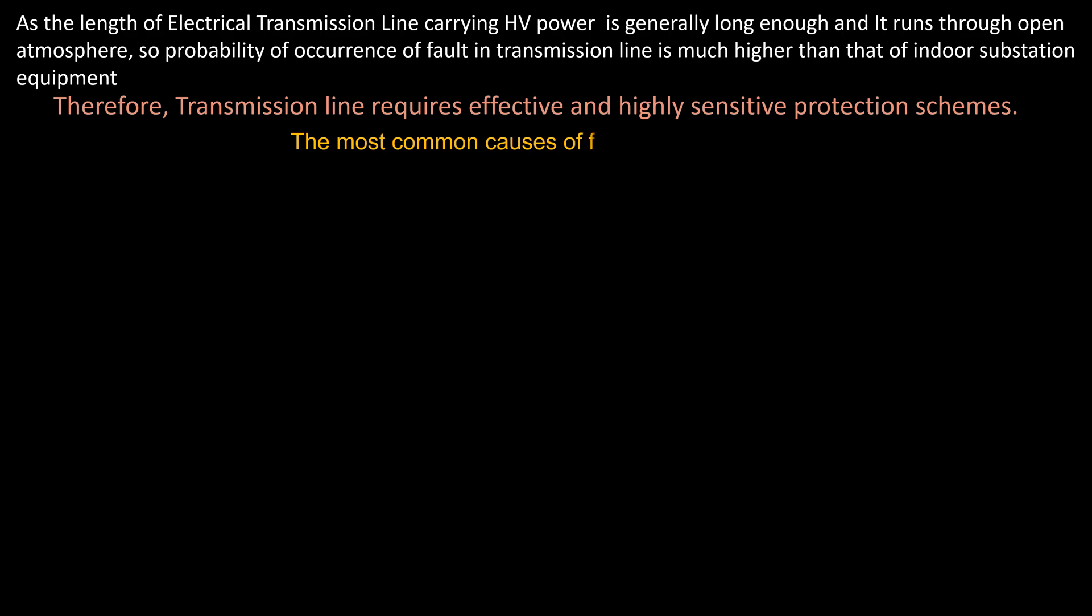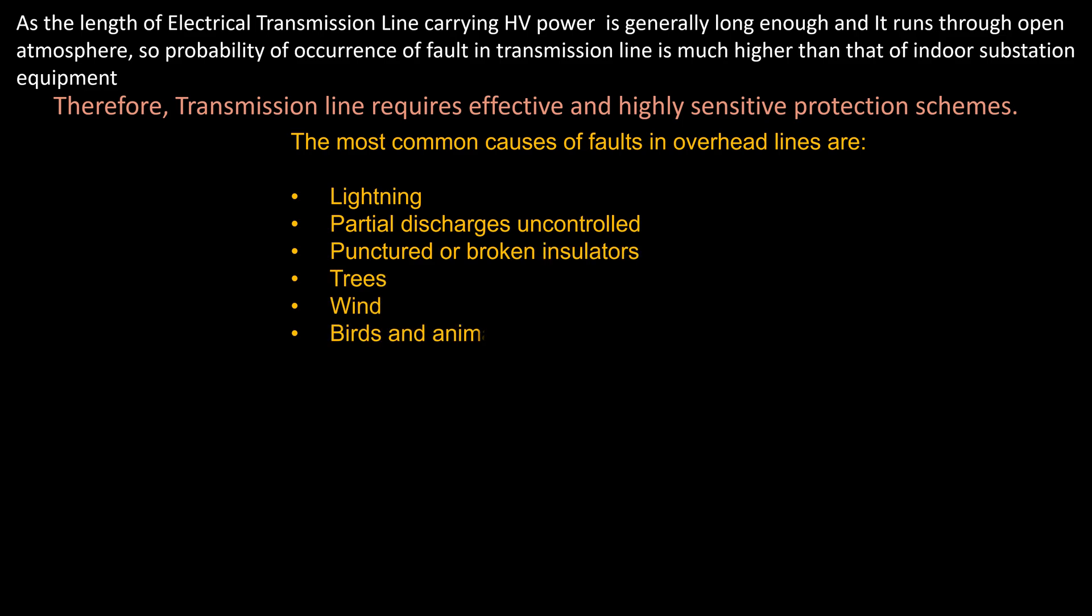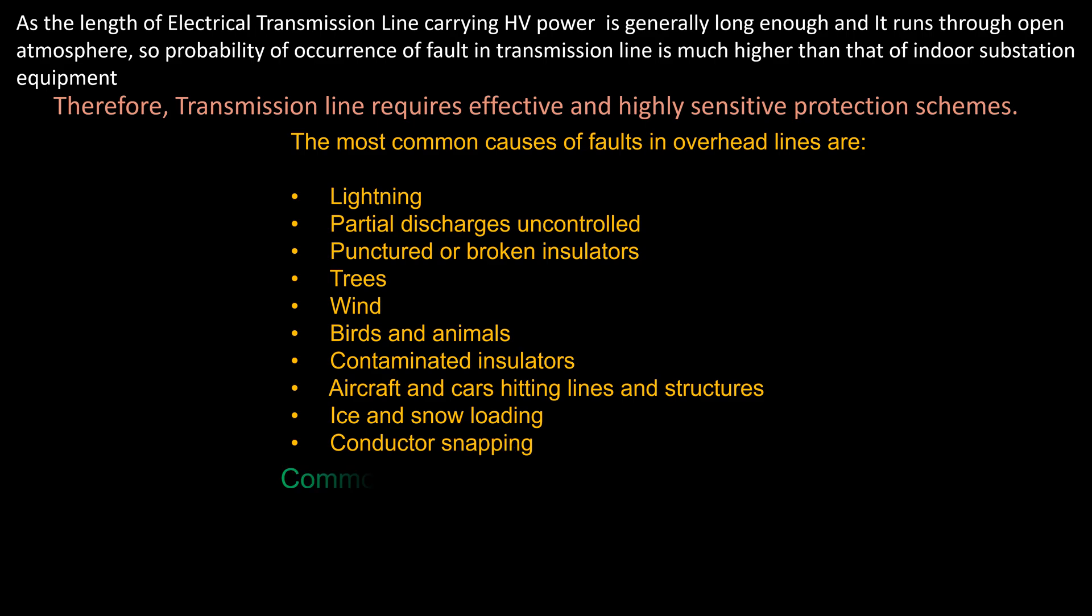The most common causes of faults in overhead transmission lines are lightning, partial discharges, uncontrolled punctured or broken insulators, trees, wind, birds and animals, contaminated insulators, aircraft and car heatings on lines and structures, ice and snow loading, and conductor snapping.